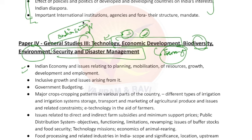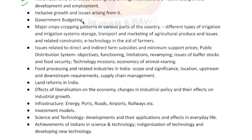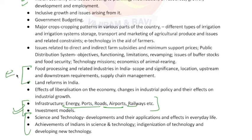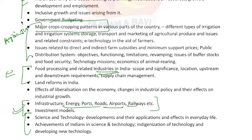What are the relations between India and Pakistan? What are the issues between India and Myanmar? All these things are in it. And Science and Technology, plus we have infrastructure — energy, ports, roads, airports, railways — these things are also covered. Food processing and related industries in India have some topics. And there are also some agriculture topics like crop patterns and cropping patterns. Government budgeting is also part of your economic development.